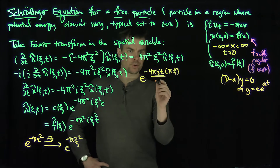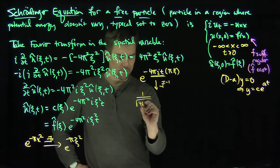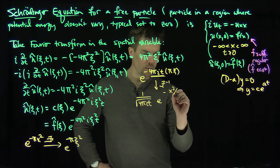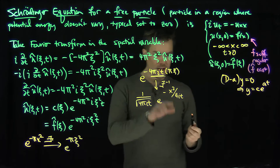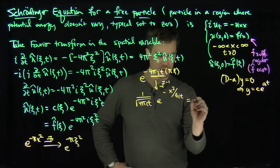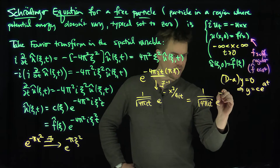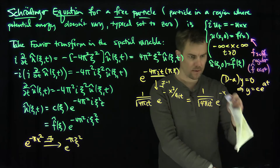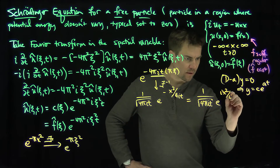The inverse Fourier transform of this kernel is 1/√(4πit) · e^(−x²/(4πit)). The pi cancels out and we get exactly this expression. Since 1/i equals −i, this is the same as 1/√(4πit) · e^(ix²/(4t)).